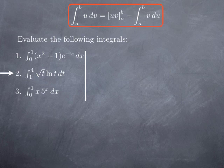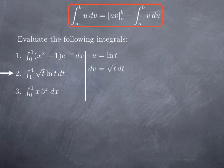Moving on to the next example: the integral from 1 to 4 of √t · ln(t). Again, we have to decide what to differentiate and what to integrate. Here we don't have much of a choice, because for the natural log we know the derivative but not an antiderivative we're expected to memorize. So naturally, we pick u = ln(t) and dv = √t dt.